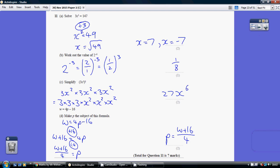Question 11. So 3x squared equals 147. Now this is 3 times x times x.